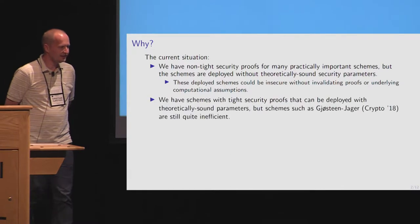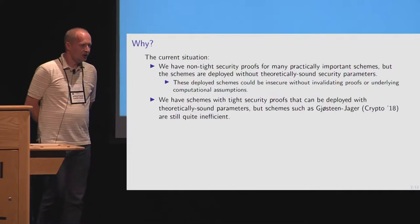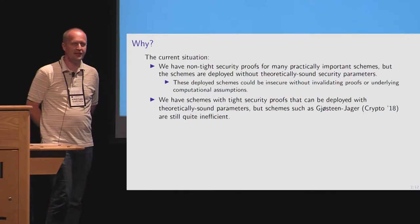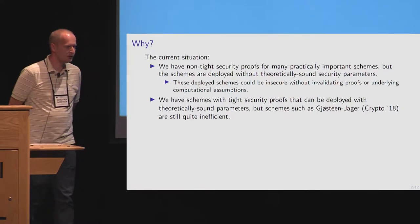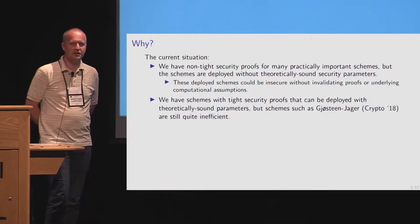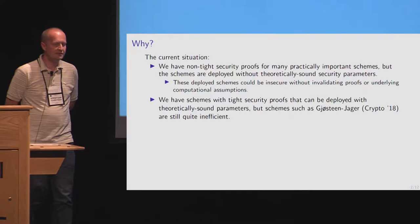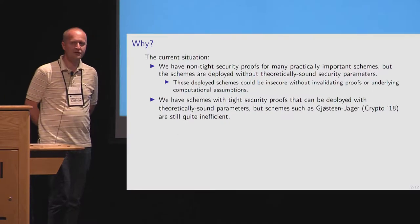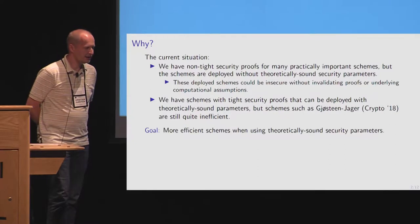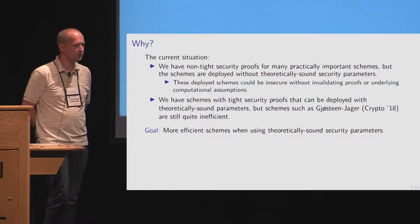We also have schemes with what's known as tight security. You can deploy them with the key sizes we use today and get the proper security guarantee. But as we saw with Jösten Jäger last year at crypto, such schemes tend to be quite a bit slower than what you'd like, even though if you deploy with theoretically sound parameters they're still faster than the alternatives. The question we've started looking at is: can we get a more efficient scheme using theoretically sound parameters?